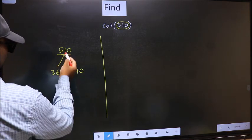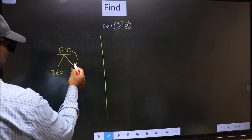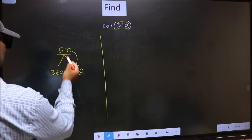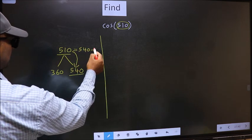Next, 510 is close to which number? This is close to 540. So, 510 now should be written as 540 minus 30.